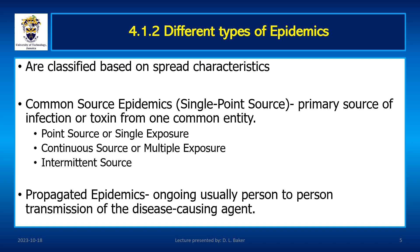Another major type is propagated epidemics. A propagated epidemic involves ongoing transmission of infectious origin and results from person-to-person transmission of disease agents. Secondary cases become the source of infection for new cases. When plotted on a graph, there is a steady rise that tapers over time. Transmission may be vehicle-borne or vector-borne and continues over a few generations until there are no susceptible individuals. Such epidemics are more likely where crowds of susceptible individuals gather, as in fairgrounds and fiestas.